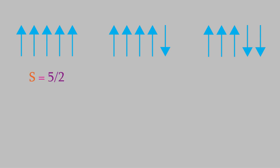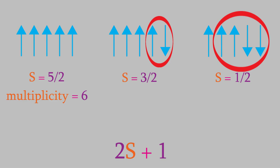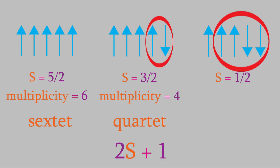Now we can determine the value of capital S for the three possibilities. The first state has five electrons with the same spin, so capital S is five halves. The second one has two electrons with opposite spins that cancel out, so S overall is three halves. Finally, the third possibility has two pairs of electrons with opposite spins, so S overall is one half. The multiplicity of each state is given by 2S plus 1, so the first arrangement has a multiplicity of six — a sextet — the second is a quartet, and the last one is a doublet.